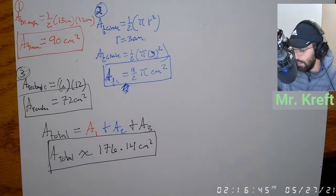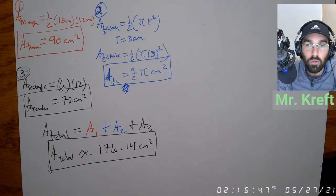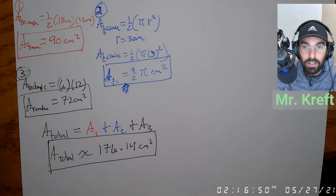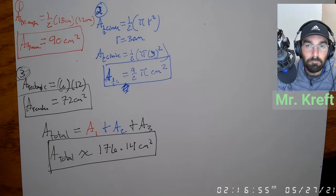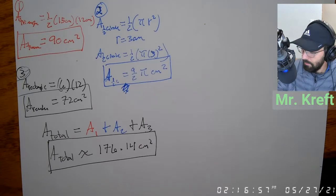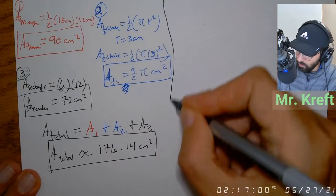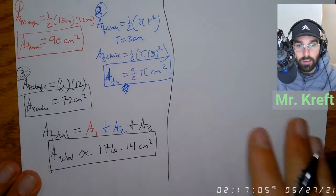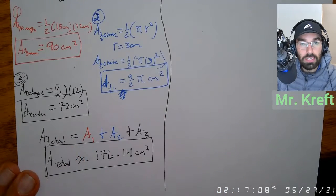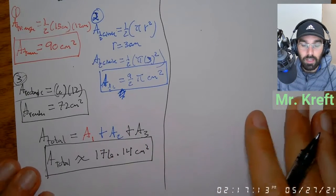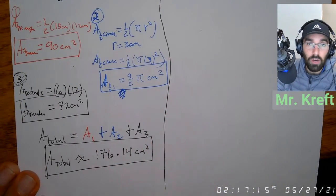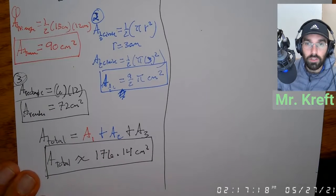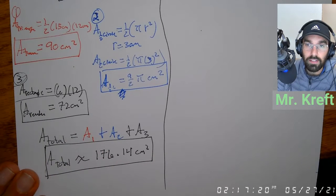Does anybody have questions about what just happened? This is composite shapes — there will definitely be something like this on the final. You need to be able to take a composite shape, break it down into smaller shapes, and find the area. We're going to use this concept when we move into volume next.